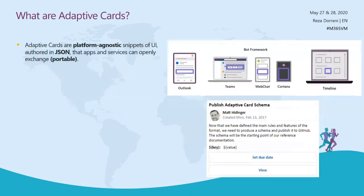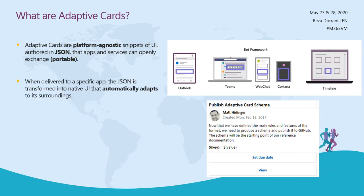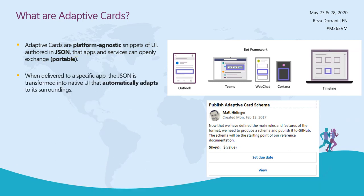What are adaptive cards? Adaptive cards are platform-agnostic snippets of UI authored in JSON that apps and services can openly exchange — portable. The key aspects to focus on are: platform agnostic, JSON-based, and portable.